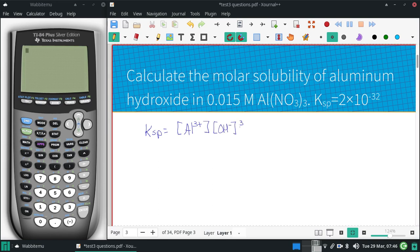So that'd be what our Ksp looks like. And in terms of the solubility, 2 times 10 to the negative 32nd is going to be equal to, for every hydroxide dissolved, there'd be 1 aluminum, but there'd be 3 hydroxides. So we'd have something like so.